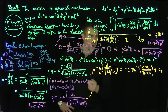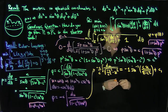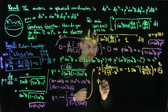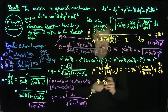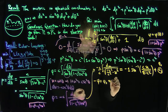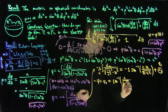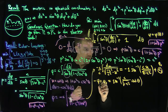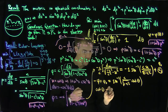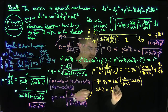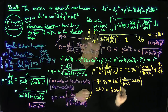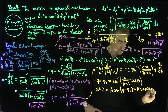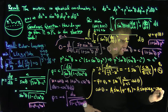Back-substituting u = cot θ and writing the constant as φ₀, we get φ − φ₀ = arcsin(c · cotθ / √(1 − c²)). Taking the sine of both sides and multiplying through by sinθ, cotθ = A · sin(φ − φ₀) = A(sinφ cosφ₀ − cosφ sinφ₀), and multiplying both sides by sinθ gives cosθ = α₁ · sinθ sinφ + α₂ · sinθ cosφ.